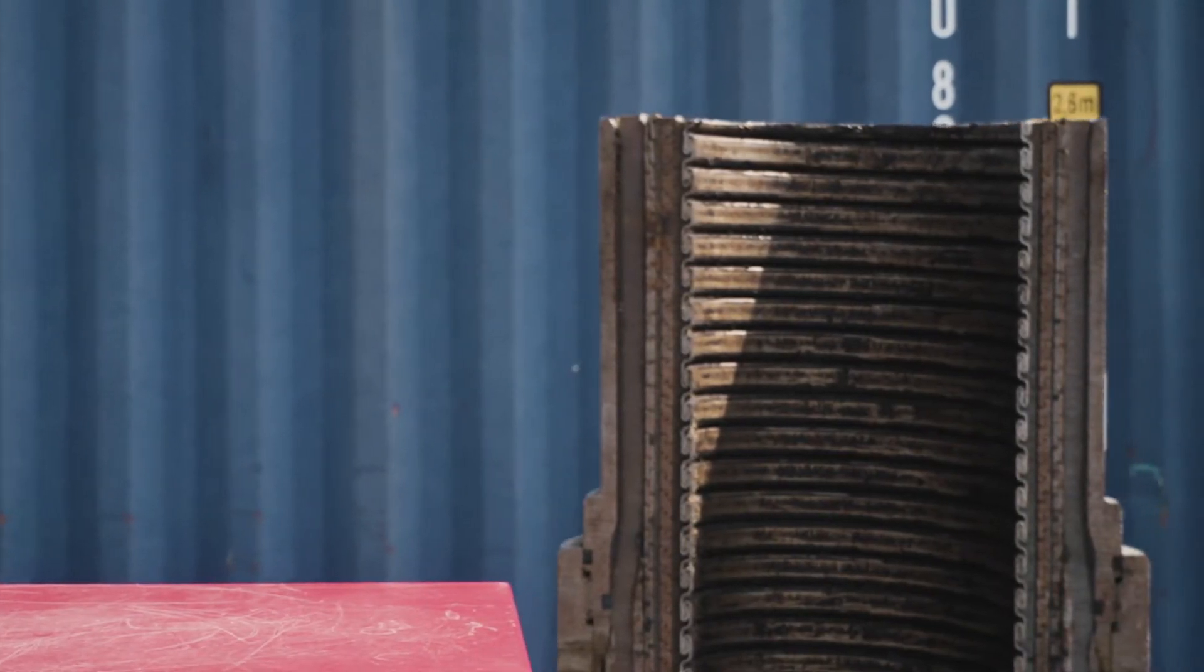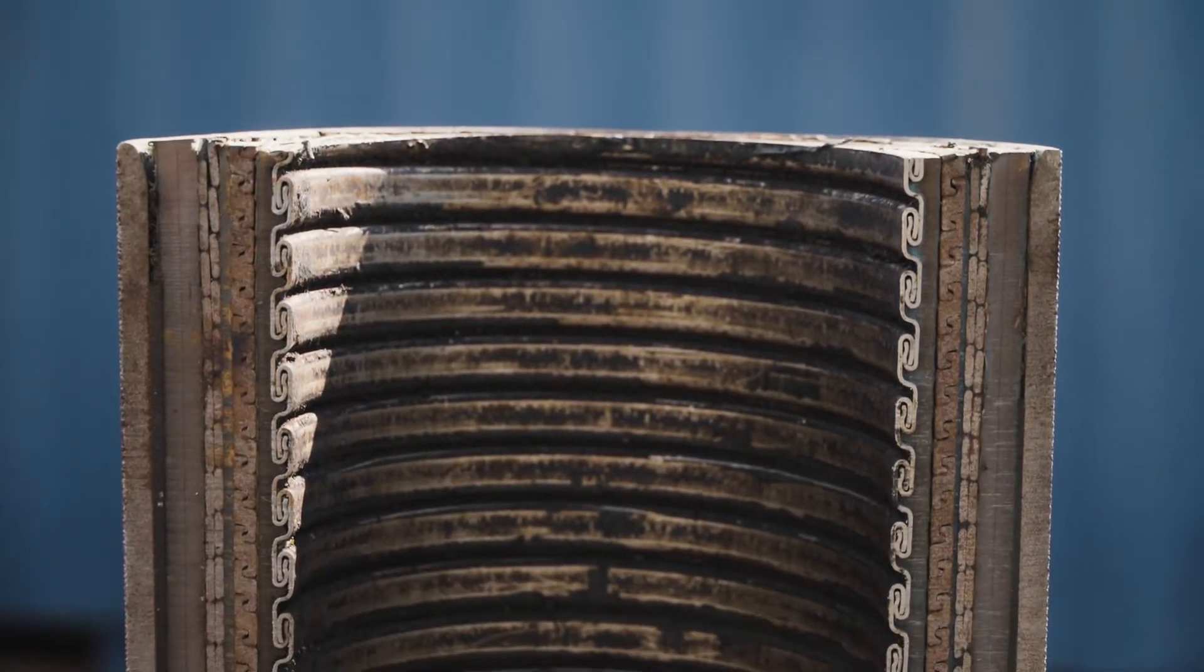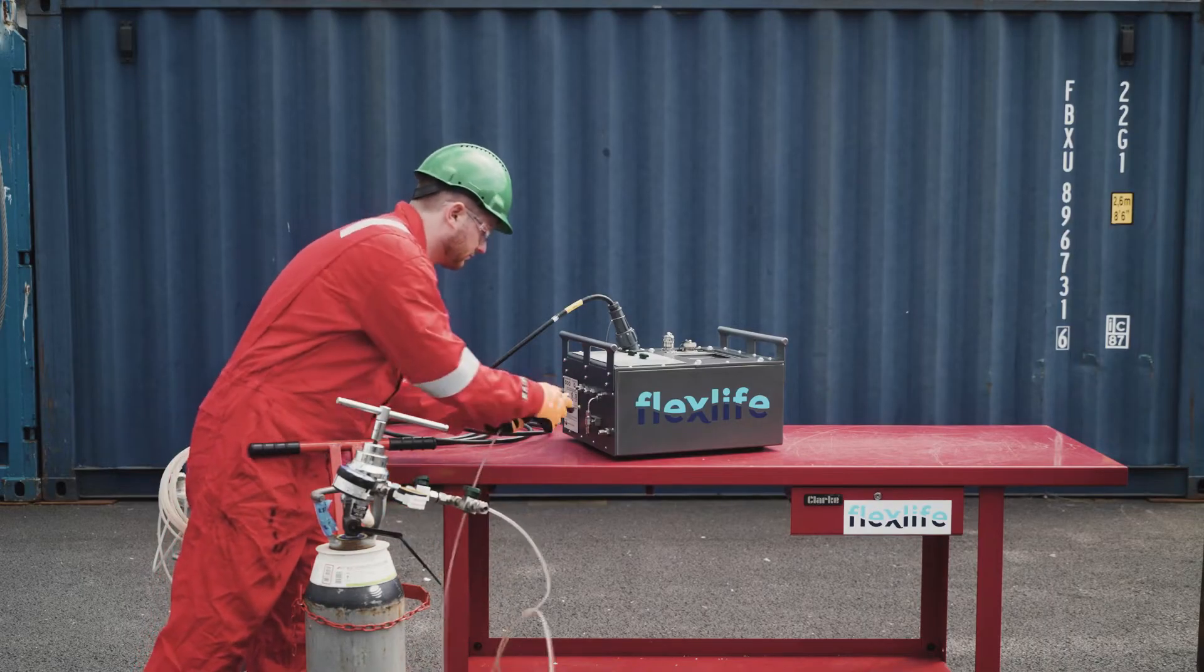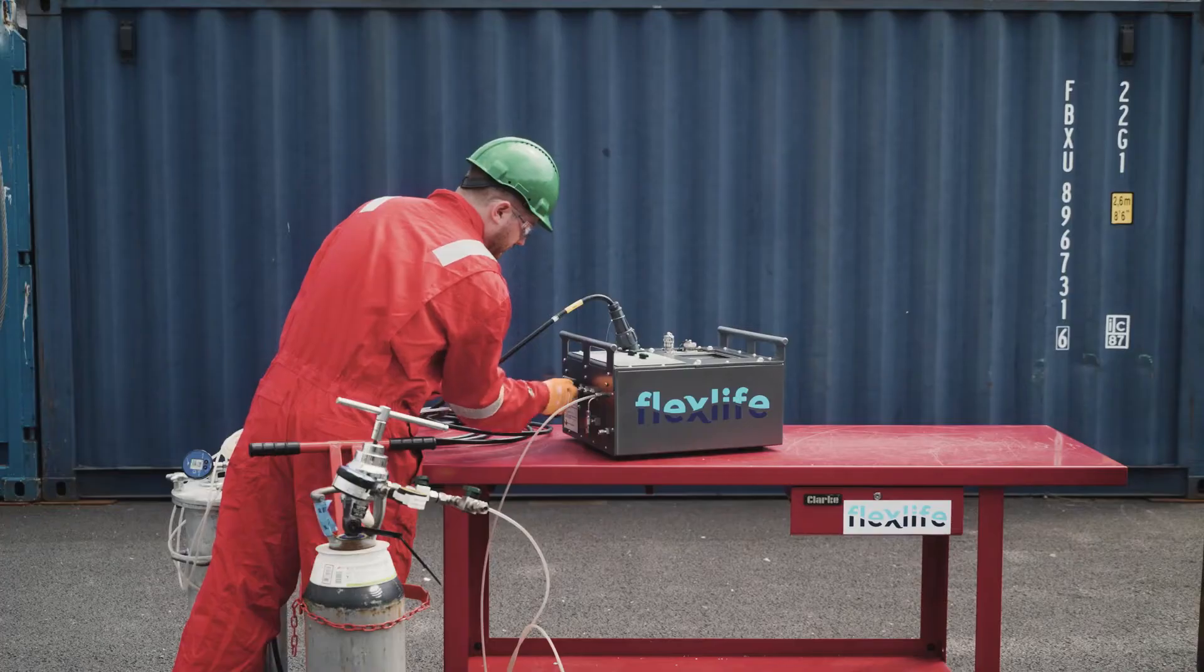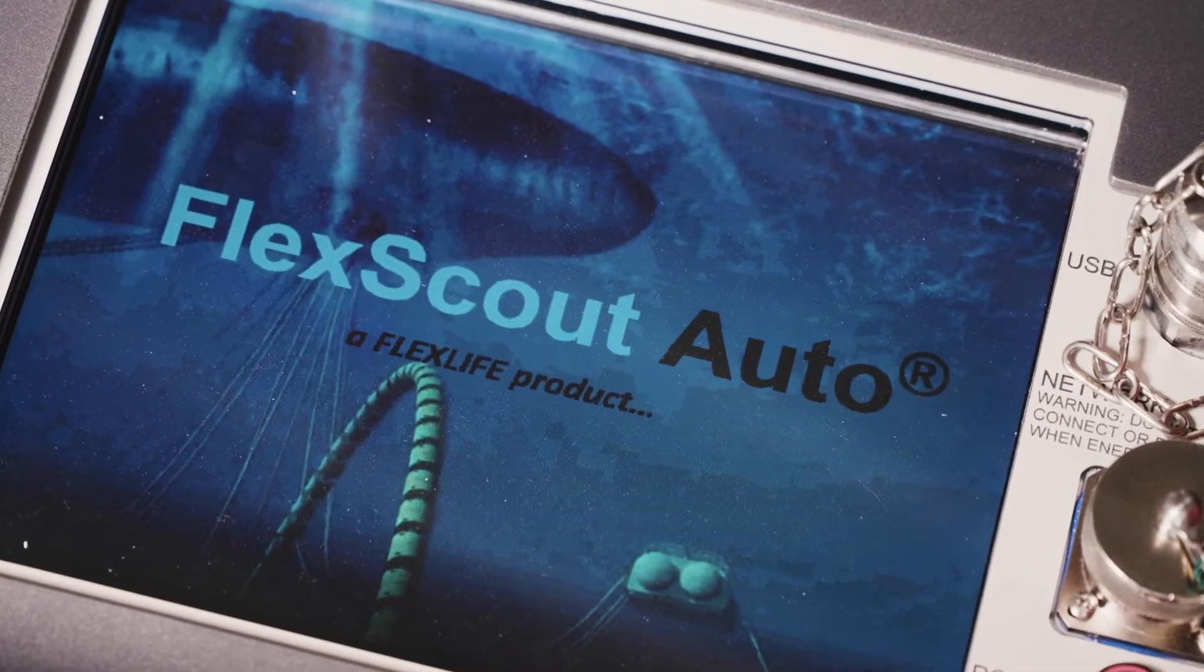Testing is done by maintaining a stabilized pressure in the annulus and measuring its free volume. Inexperienced testers often don't allow sufficient time for the annulus to fill and stabilize, resulting in unreliable test data. The FlexScout Auto eliminates this issue.